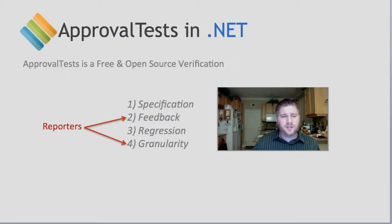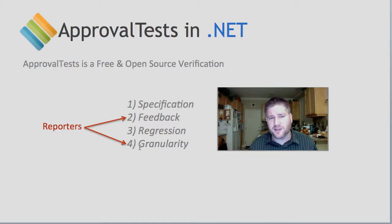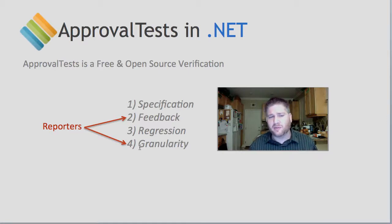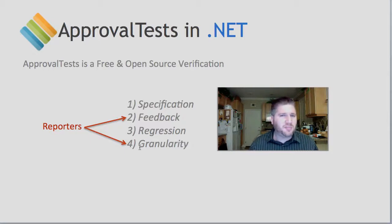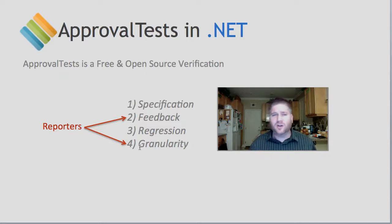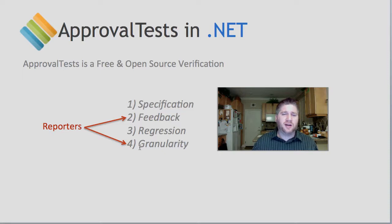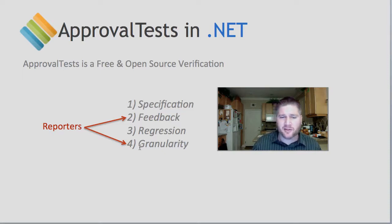I've mentioned before that there are four things that unit tests give you: specification, feedback, regression, and granularity. All of these are important, although which ones are important to you can sometimes be a question of personal taste or the area that you're working in. However, reporters are really about the second and fourth option here — feedback and granularity.